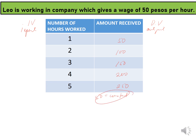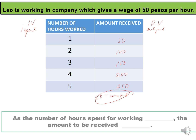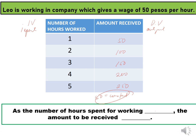Notice that as the number of hours spent for working increases, the amount to be received also increases. Notice that the direction of the two quantities — the independent variable and dependent variable — is the same. Meaning to say, their relationship is direct.